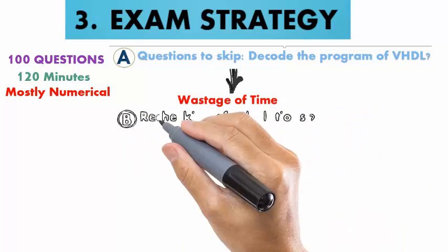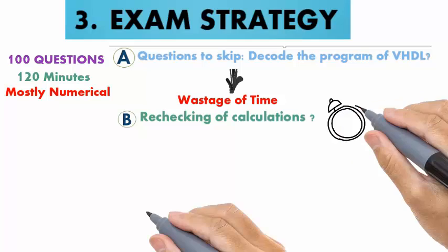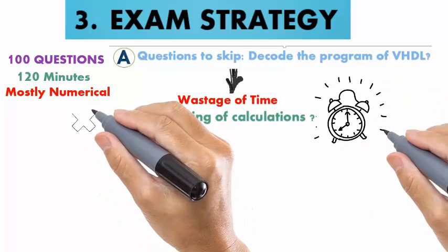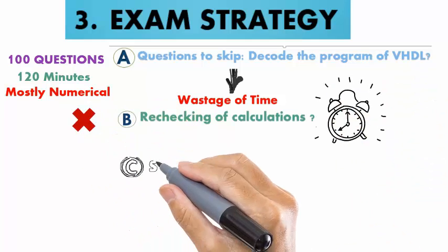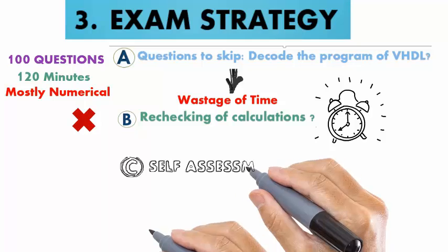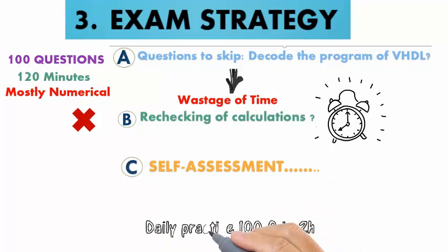Second tip: don't try to recheck your calculations via calculator as the clock runs faster in exams. Third tip: daily set a clock of 2 hours and solve 100 questions and do self-assessment.